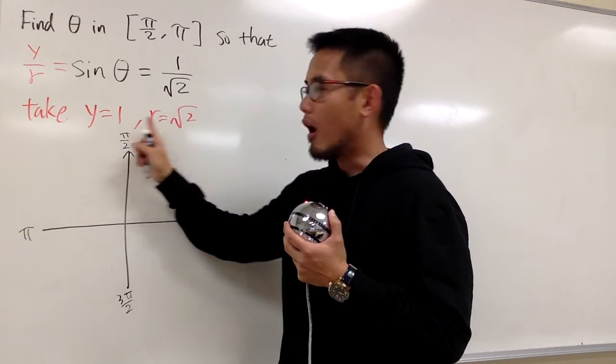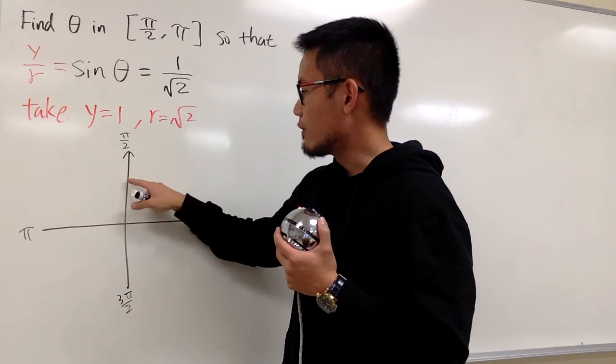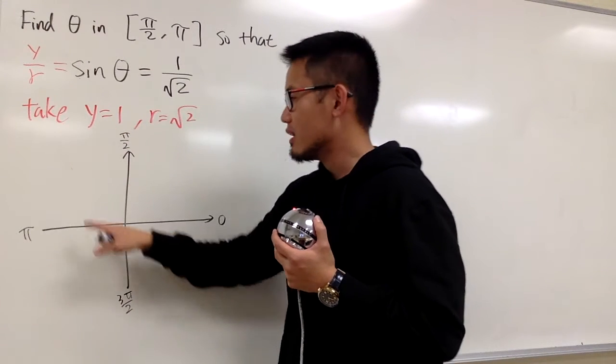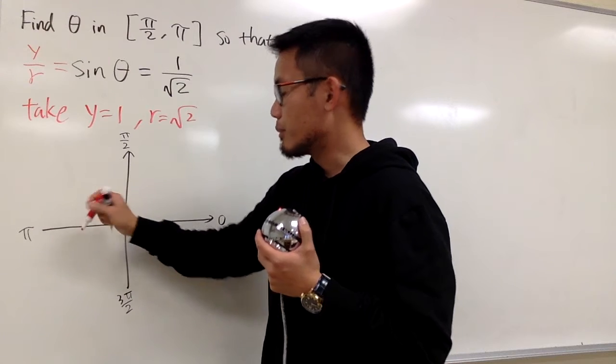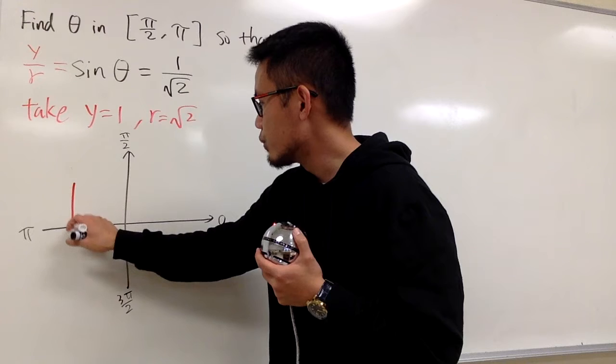y is equal to 1, r is equal to square root of 2. Let me draw y equals 1 first. So we know y equals 1 is about right here. Let me just draw 1 like this. I'm going to draw the reference triangle for you guys. Here is my y equals 1.